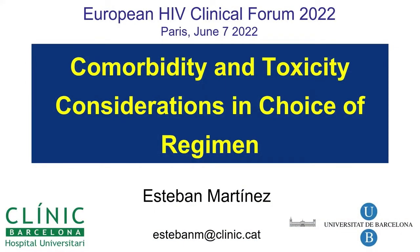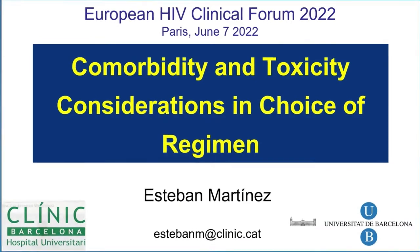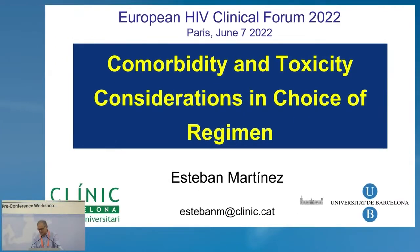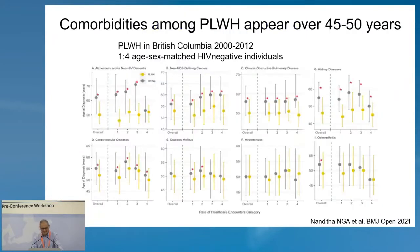Thank you for the kind invitation to be here today. I will talk about the influence of toxicity of antiretrovirals on comorbidities. Data from British Columbia shows that comorbidities appear in people with HIV earlier than in the general population, but we should remember that age 45 to 50 years is when comorbidities may appear in general.